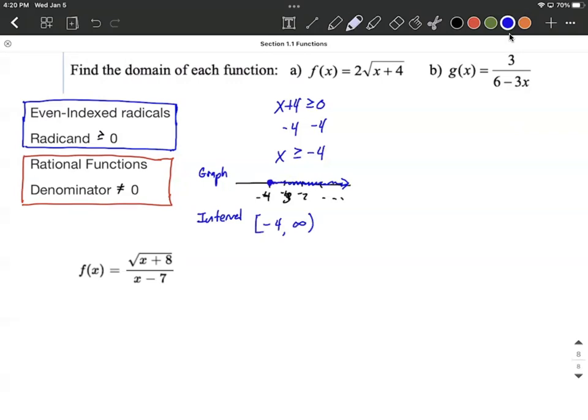And then finally, set builder notation. For set builder notation, you use the squiggly brackets and say x, and then a vertical line. For that vertical line, we say such that. And then all we do is we're going to cut and paste our inequality. So we'd say x values greater than or equal to negative four, and then close off our squiggly brackets. And that's all set builder notation is.